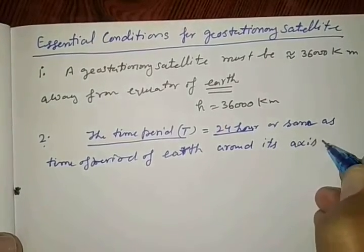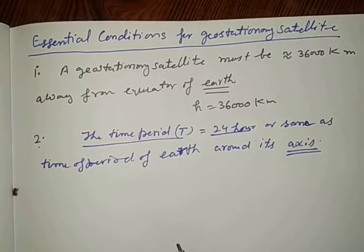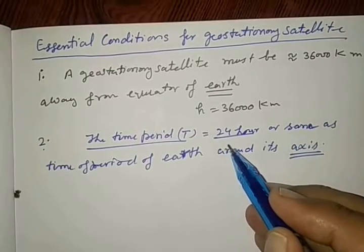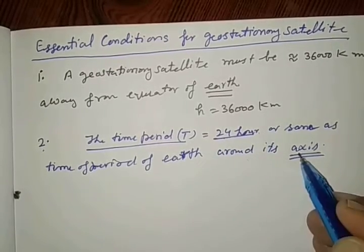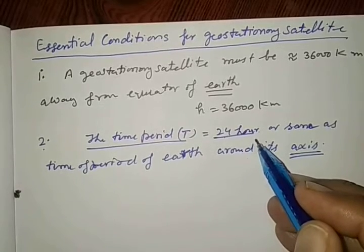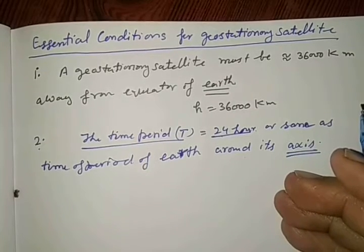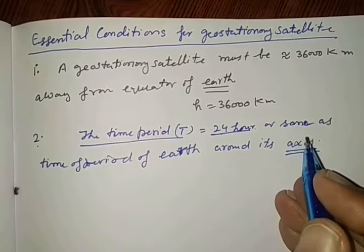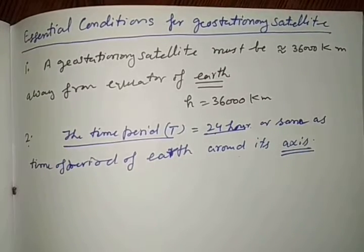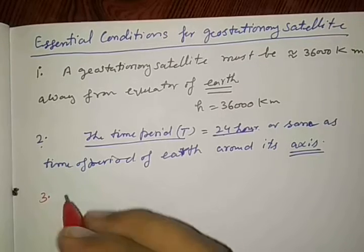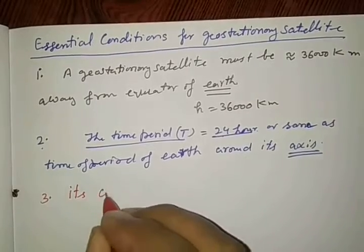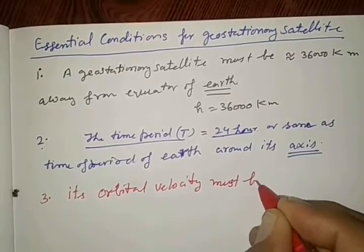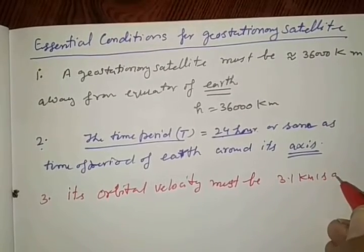This 24 hours is the same as time period of Earth around its axis. Earth revolves around the sun and also spins on its own axis. When it rotates on its axis the time period is 24 hours and that 24 hours is taken for the time period of geostationary satellite. As Earth rotates on its axis, the satellite must also rotate in the same way.